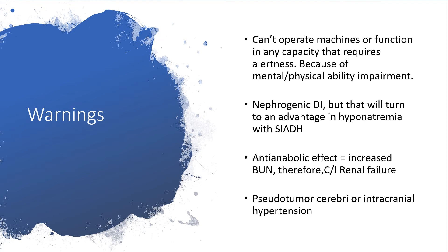Nephrogenic diabetes insipidus is a possibility, but that would turn out to be an advantage in hyponatremia associated with syndrome of inappropriate antidiuretic hormone. The anti-anabolic effects of demeclocycline will increase blood urea nitrogen, and therefore in renal failure its use is contraindicated. Pseudotumor cerebri or intracranial hypertension is also possible.